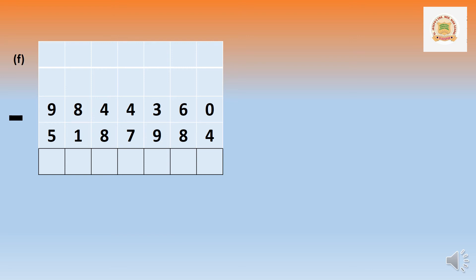Question f: 98,44,360 minus 51,87,984. From 0 we cannot minus 4, so we borrow from 3 — making it 10. Ten minus 4 equals 6.